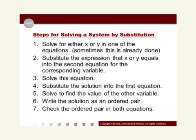Step seven is to take that ordered pair solution and check it by plugging it back into both equations. If it works for both equations, then your ordered pair is correct. If you follow these steps in order, you should find the correct ordered pair for your system of equations. It's probably a good idea to pause the video now to make sure you have these steps in your notes. As you go through problems, go step by step, and as we do more problems, these steps will become natural to you.